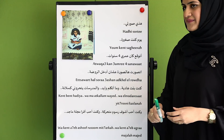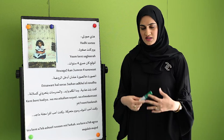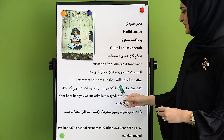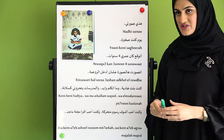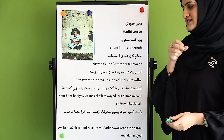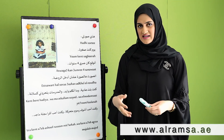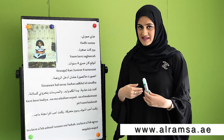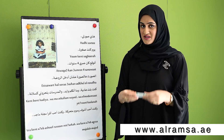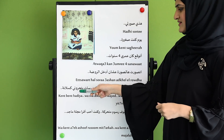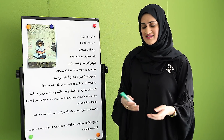وما أتكلم وايد — I was really calm and I didn't talk a lot. والمدرسات — the female teachers — يتحروني كسلانا. They thought that I was lazy or didn't understand what was going on, and that's why I was too silent.